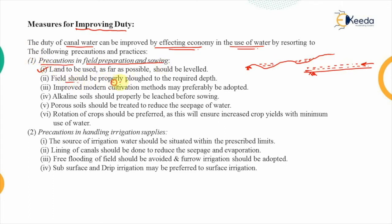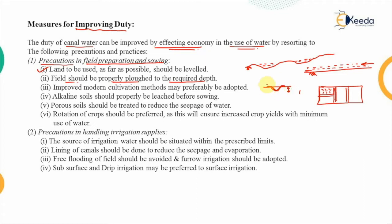Second, the field should be properly plowed to the required depth. Once the land is leveled, it is divided into separate regions depending on the type of irrigation method used. Each parcel should be plowed so that seeds can be placed inside, but only to the required depth — not more — otherwise water will collect in the hole.